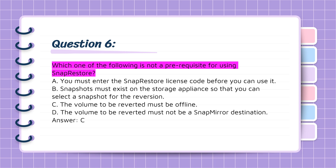Question 6: Which one of the following is not a prerequisite for using SnapRestore? A. You must enter the SnapRestore license code before you can use it. B. Snapshots must exist on the storage appliance so that you can select a snapshot for the reversion. C. The volume to be reverted must be offline. D. The volume to be reverted must not be a SnapMirror destination. Answer: C.